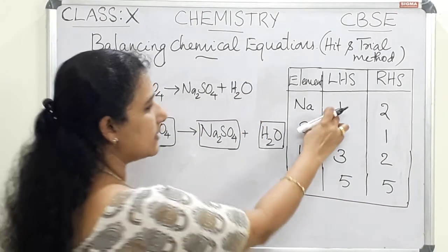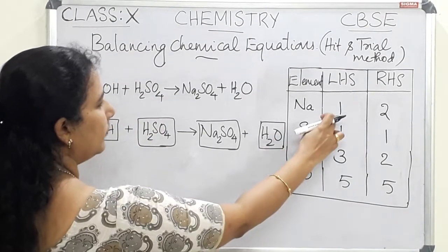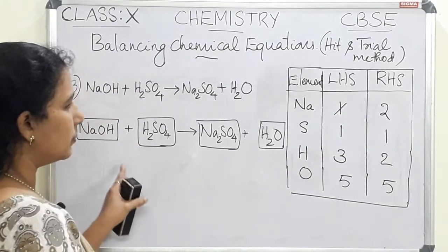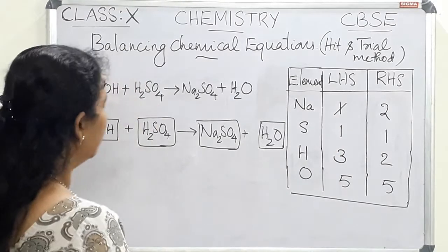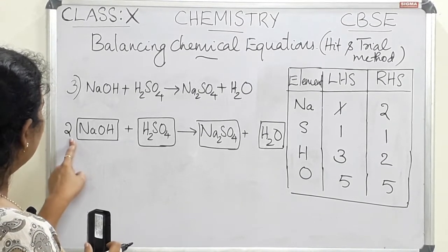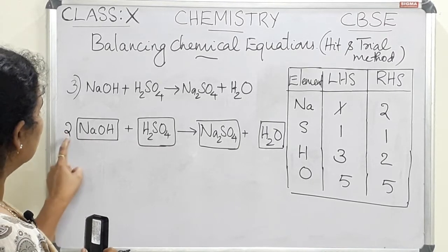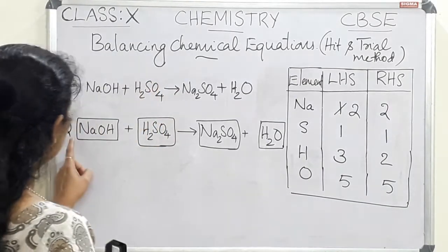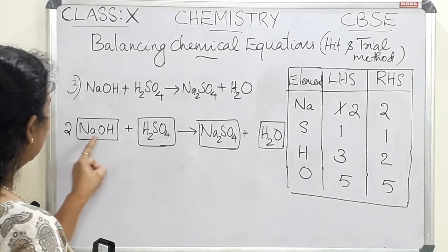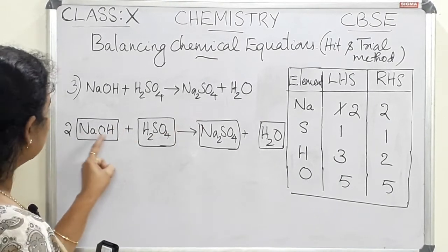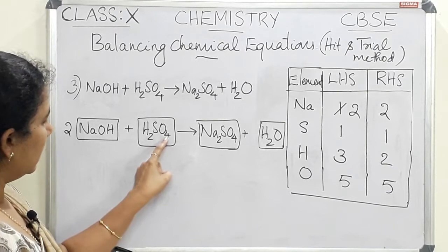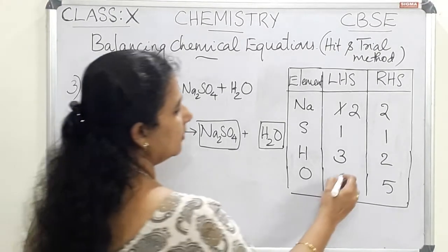We start by balancing sodium. The RHS has two sodium atoms, so we add a coefficient of 2 to NaOH in the LHS. This coefficient 2 applies to the sodium, oxygen, and hydrogen in NaOH. Now sodium in the LHS is 2, matching the RHS. Oxygen in the LHS becomes 2 (from NaOH) + 4 (from H₂SO₄) = 6. Hydrogen in the LHS becomes 2 (from 2×NaOH) + 2 (from H₂SO₄) = 4.